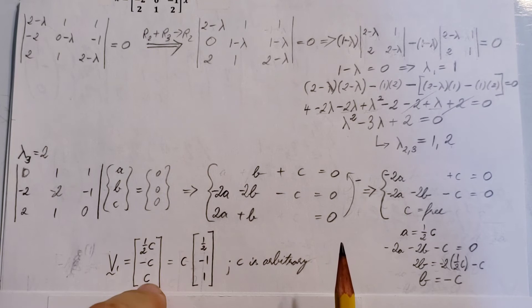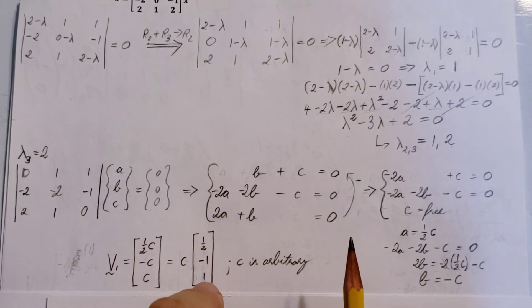We can take c, factor it out in the front. c times 1 half, negative 1, and 1. There you go.